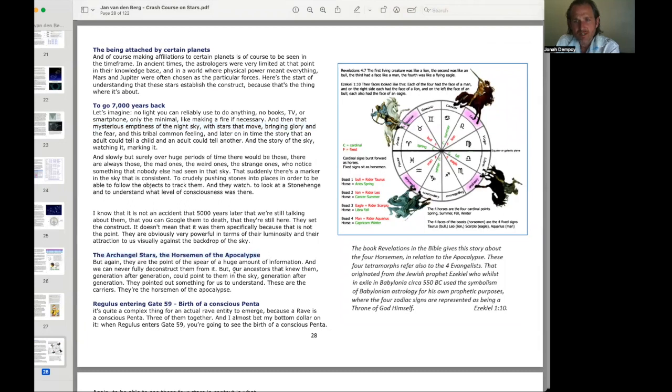The archangel stars, the horsemen of the apocalypse. But again, they are the point of the sphere of a huge amount of information, and we can never fully deconstruct them from it. But our ancestors that knew them generation after generation could point to them in the sky, generation after generation. They pointed out something for us to understand. These are the carriers. They're the horsemen of the apocalypse. The book of Revelations in the Bible gives the story about the four horsemen. These four tetramorphs refer also to the four evangelists.